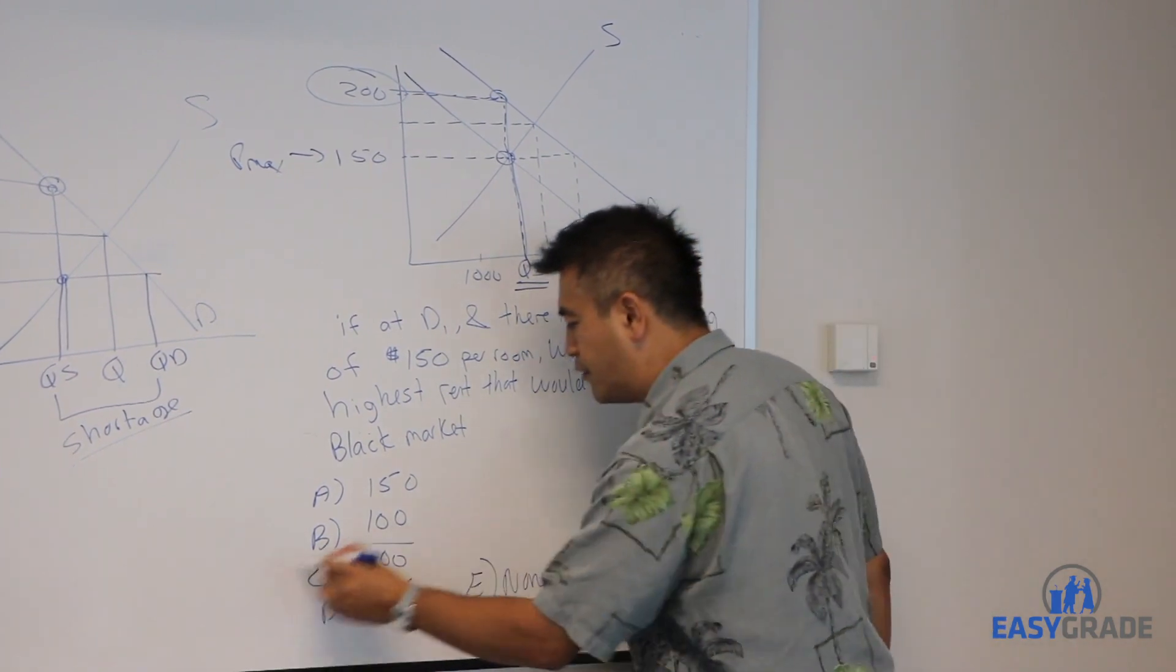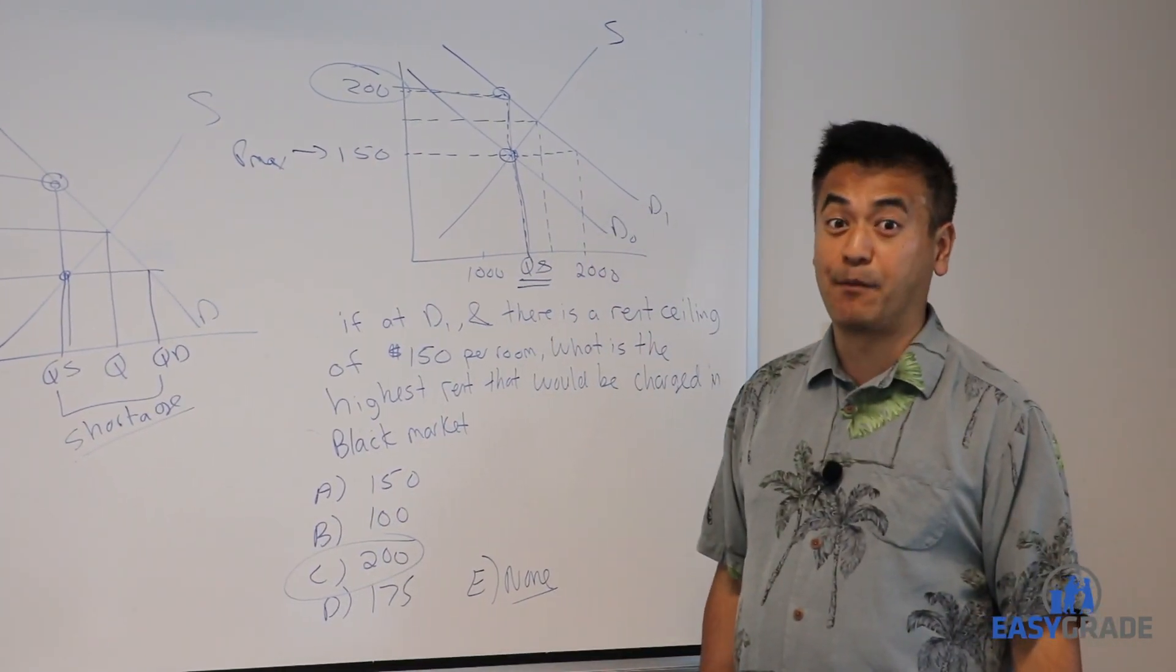And that 200, answer C, is the black market price.